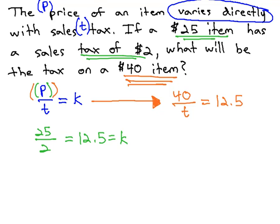We now have an equation we can solve to find the tax. We know to clear the denominator with the least common denominator of t, by multiplying both sides by t. This gives us 40 equals 12.5t.